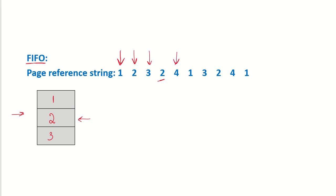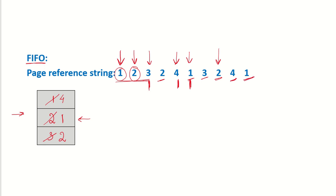Then 4 is a page fault. Under FIFO, page 1 was brought in first, so it is replaced by 4. Then there is a reference to 1 again — since it was just taken out, that is a page fault again. Now pages 2, 3, and 4 are in memory; page 2 was brought in first so 2 is replaced by 1. Then 3 is a hit, 2 is a page fault again. Out of pages 4, 1, and 3, page 3 was brought in earliest so 3 is replaced by 2. Then 4 is a hit and 1 is a hit. Counting all faults gives 6 page faults under FIFO.